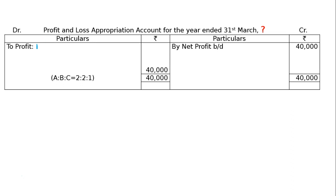Now distributing profit to A, B and C in the ratio 2:2:1. So A, B, C share the 40,000 in ratio 2 is to 2 is to 1.